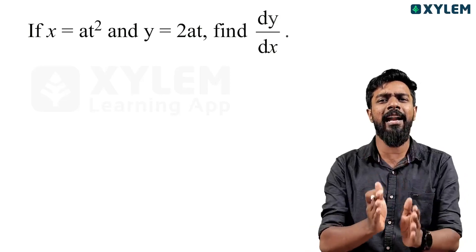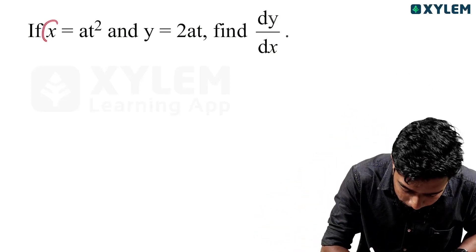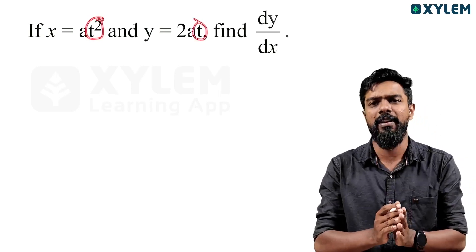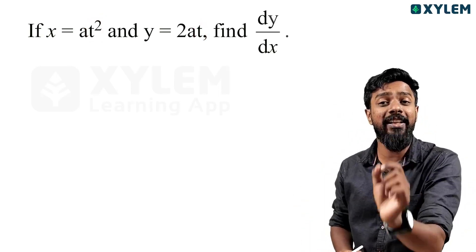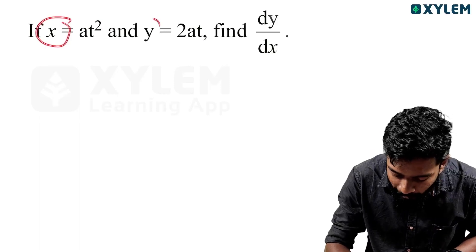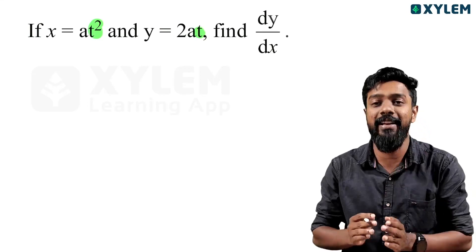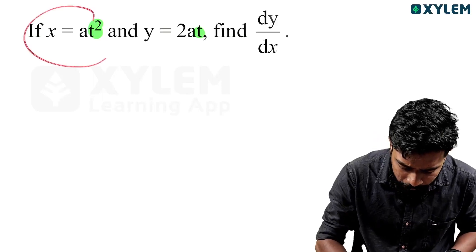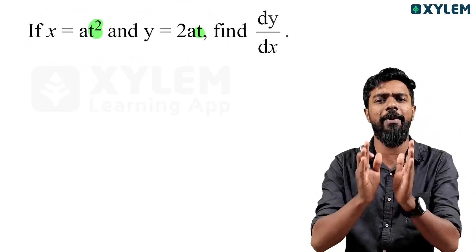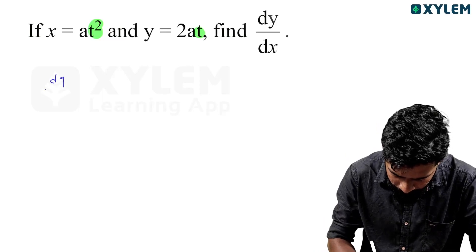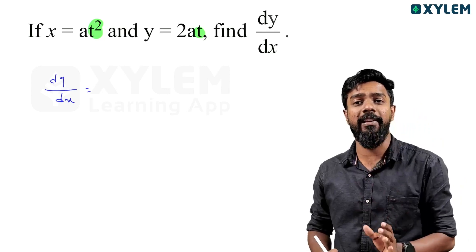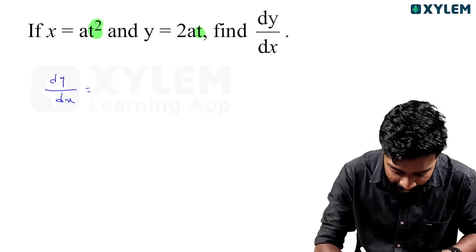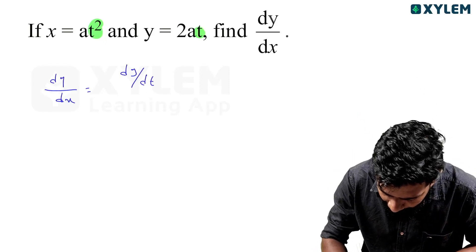What is a parametric function? When x and y are each expressed in terms of some other variable — you will see t terms, any variable — where x equals some expression and y equals some expression, that third variable is called the parameter. This is a parametric function, and we will find dy by dx.